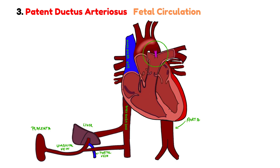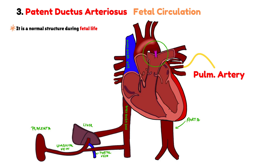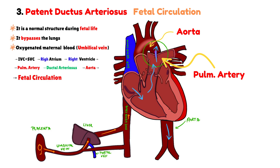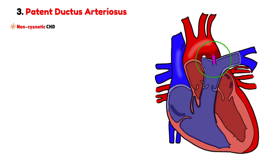To properly understand the patent ductus arteriosus, let us briefly recall how fetal circulation works. During fetal life, the ductus arteriosus is a normal structure connecting the pulmonary artery to the descending aorta. Its role is to bypass the lungs, which are not yet functioning, and to allow oxygenated blood from the maternal circulation to directly reach the systemic fetal circulation. Normally, this duct closes spontaneously a short time after birth. However, when this closure fails to occur, the result is a patent ductus arteriosus, which represents another non-cyanotic congenital heart disease, behaving as a left-to-right shunt.